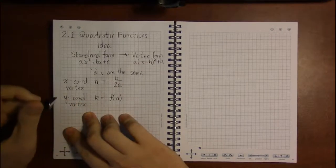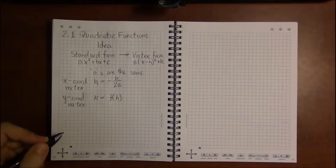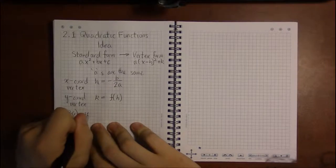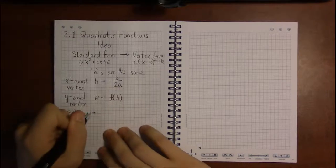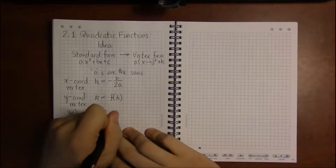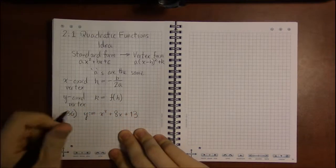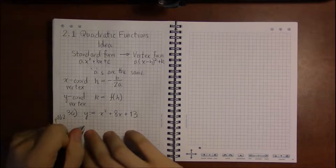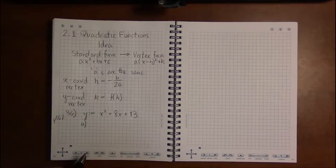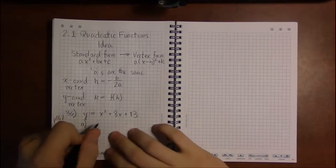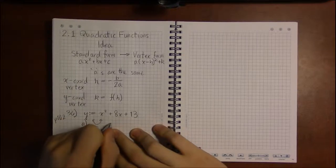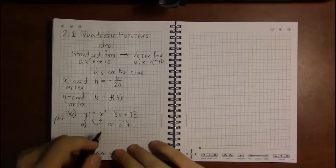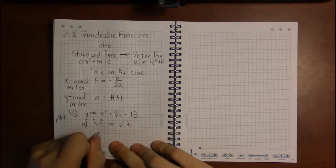So let's take a look at an example. So if we look at something like 36, where we have y being defined as x squared plus 8x plus 13. And 36 is on page 162. Part A of 36 asks us to determine whether the graph opens upwards or opens downwards. And if you remember, we talked about that in the first video for section 2.1. That's determined solely on a.